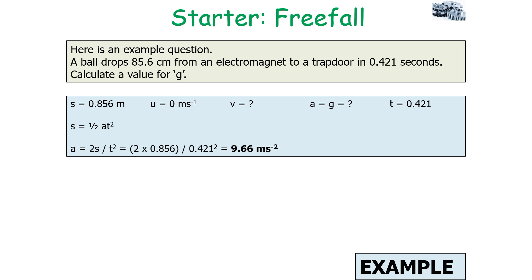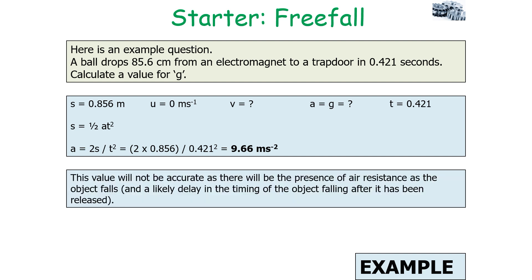We look for our correct equation for suvat and the equation for freefall. So s = ½at². Therefore, a is going to equal 2s/t². Pop in all the numbers and we get 9.66 m/s². Please be aware that this value will not be accurate compared to the real world because there will be the presence of air resistance as the object falls, and also a likely delay in the time of the object falling after it's been released.